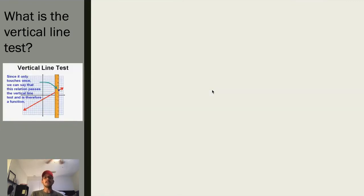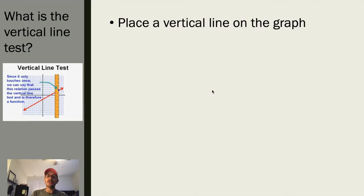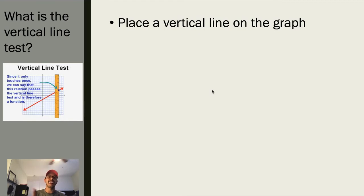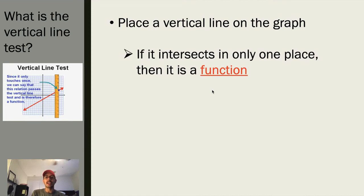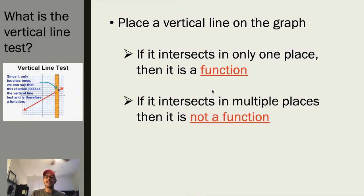The vertical line test is when we place a vertical line on our graph — you could draw it or use a straight edge like a ruler or the edge of your paper — and slide it throughout the graph. You're checking to see if it intersects in only one place; if so, it's a function. But if that vertical line intersects in two or more places at the same time, then it is not a function.